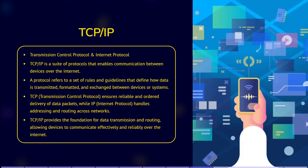Transmission Control Protocol and Internet Protocol. TCP/IP is a suite of protocols that enables communication between devices over the internet. A protocol refers to a set of rules and guidelines that define how data is transmitted, formatted, and exchanged between devices or systems. It establishes a standard method of communication to ensure compatibility and reliable data transfer. It provides the foundation for data transmission and routing. TCP ensures reliable and ordered delivery of data packets, while IP handles the addressing and routing of these packets across different networks.